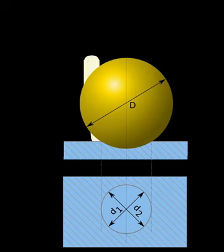Brinell hardness is sometimes quoted in megapascals. The Brinell hardness number is multiplied by the acceleration due to gravity, 9.80665 m/s², to convert it to megapascals.